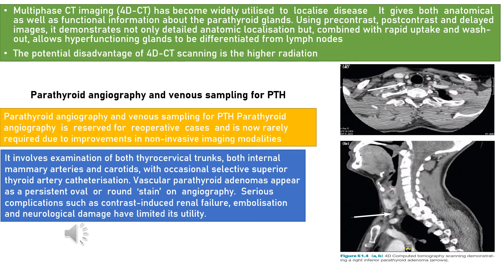For invasive imaging, we have parathyroid angiography and venous sampling for parathyroid hormone. This is reserved only for re-operative cases and is now rarely required due to improvements in non-invasive imaging. It involves examination of both thyrocervical trunks, both internal mammary arteries and carotids, with occasional selective superior thyroid artery catheterization. Vascular parathyroid adenomas appear as a persistent oval or round stain on angiography. Serious complications such as contrast-induced renal failure, embolization, and neurological damage have limited its utility.